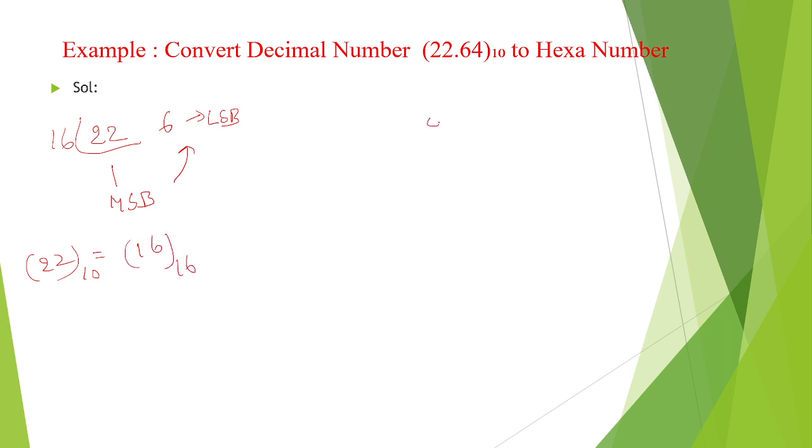And coming to the 0.64, again multiplied with 16. If it is octal number multiplied with 8, if it is binary, multiplied with 2. So here, we are converting to hexadecimal, that is why multiplied with 0.16 is equal to 10.24.